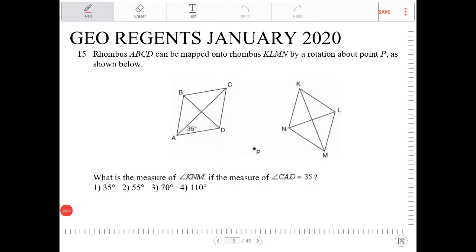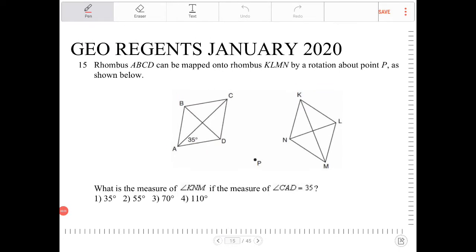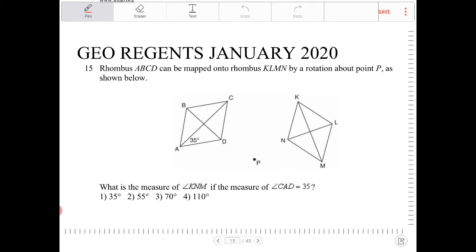So, rhombus ABCD can be mapped onto rhombus KLMN by a rotation about point P as shown below. What is the measure of angle KNM if the measure of angle CAD is 35?